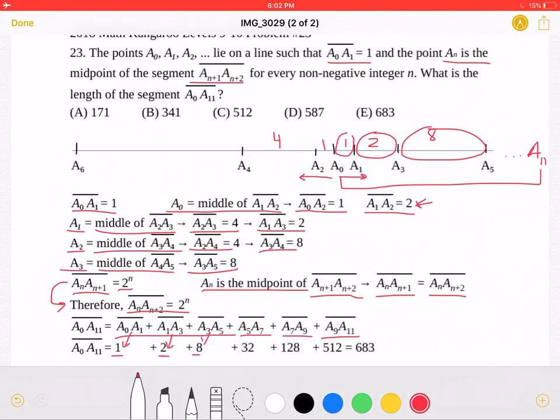You can see that this is equal to 2 to the 1st, this is equal to 2 to the 3rd, this is equal to 2 to the 5th, this is equal to 2 to the 7th, and this is equal to 2 to the 9th.